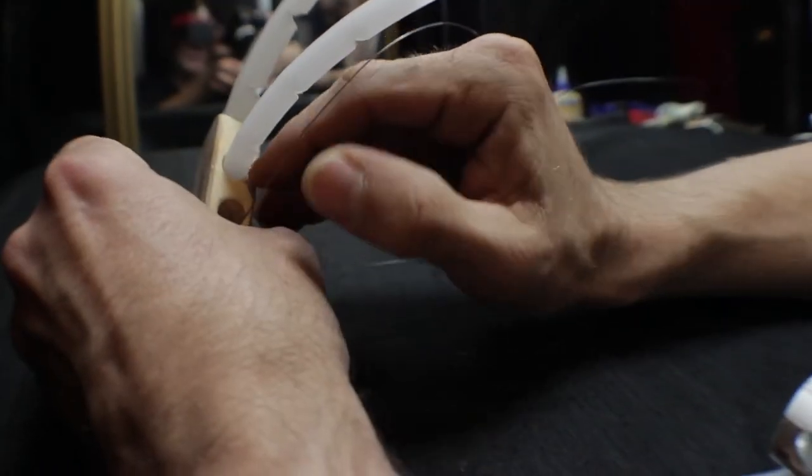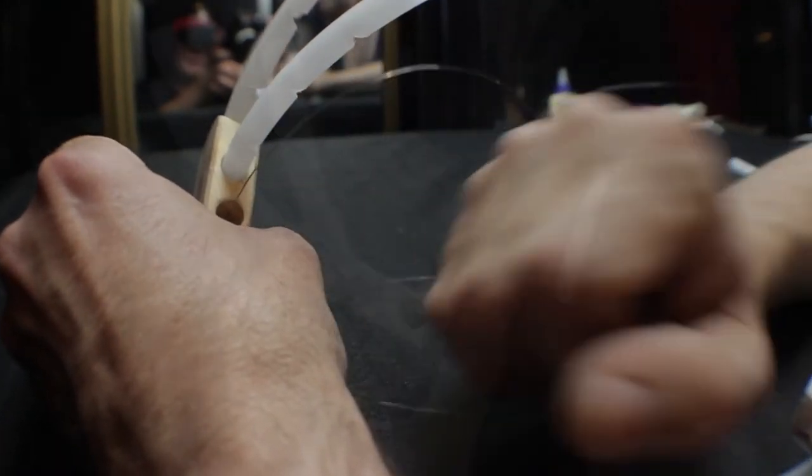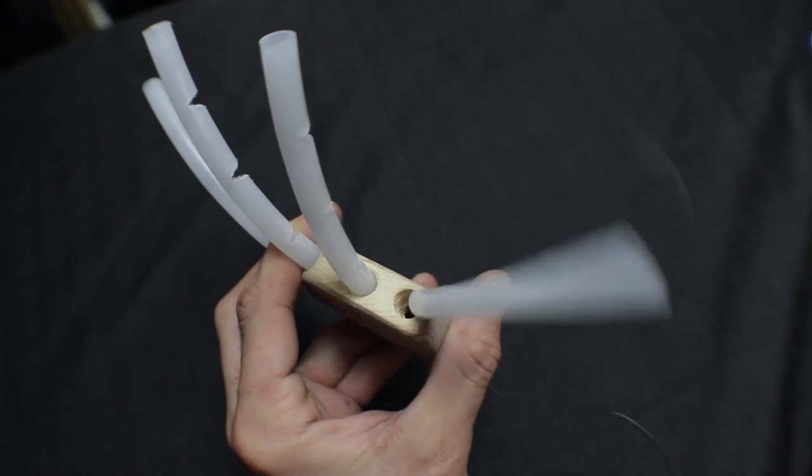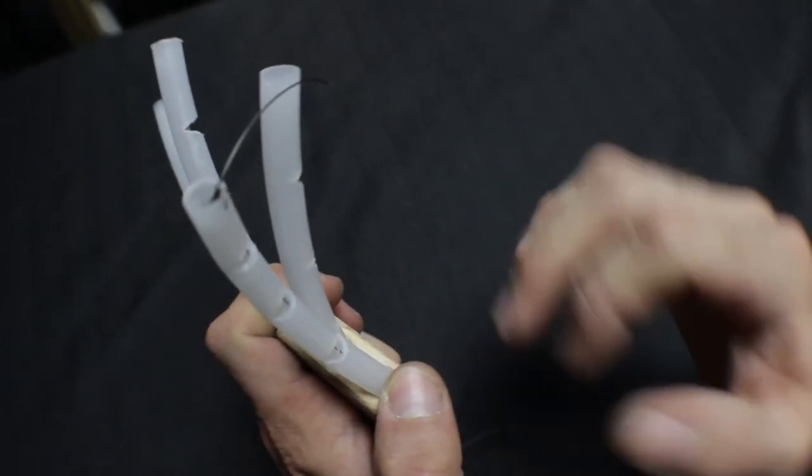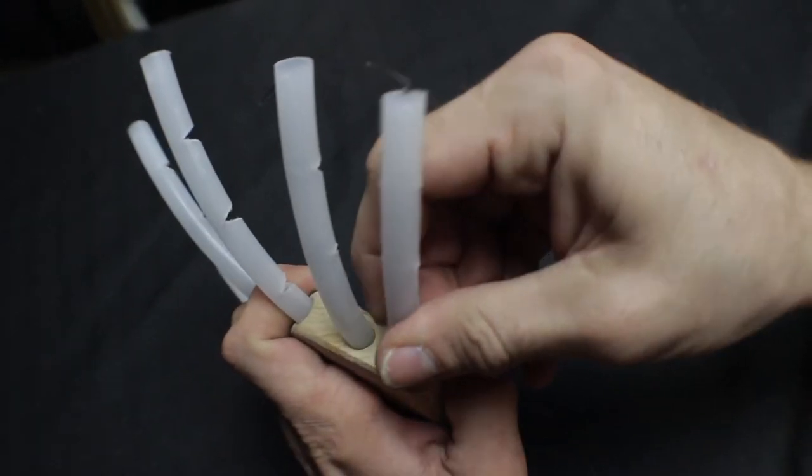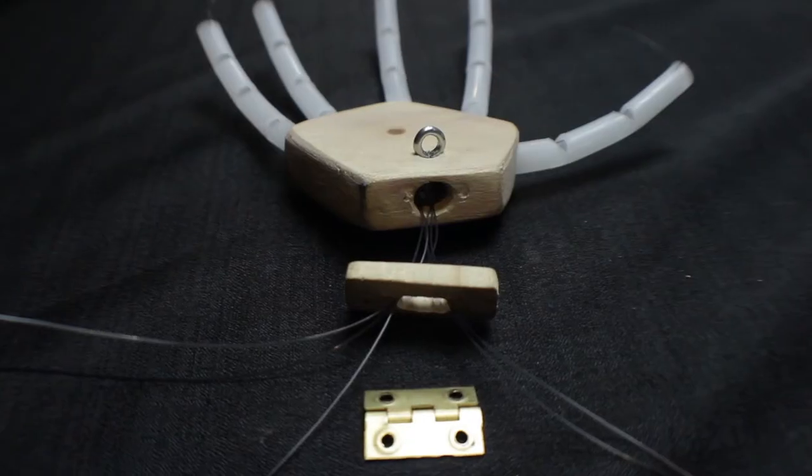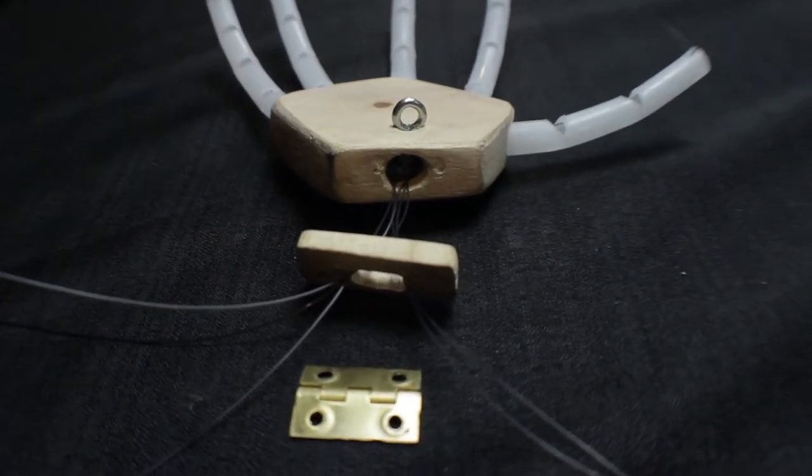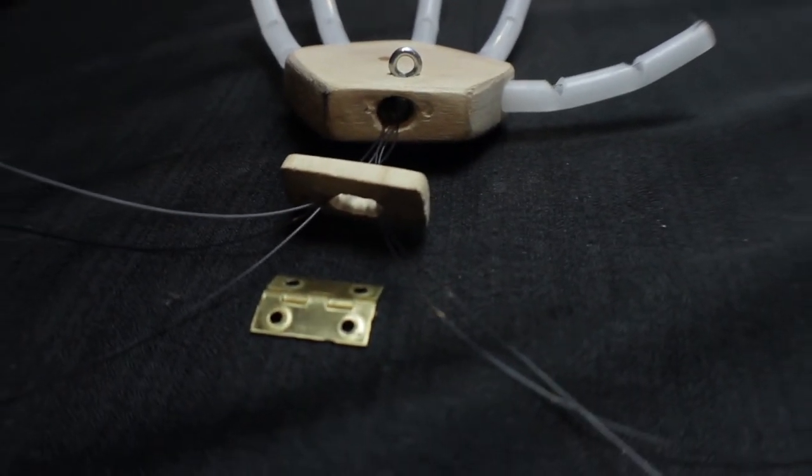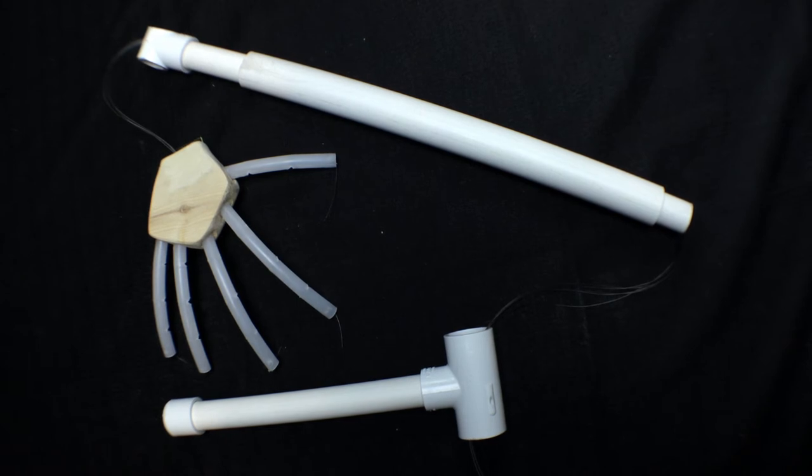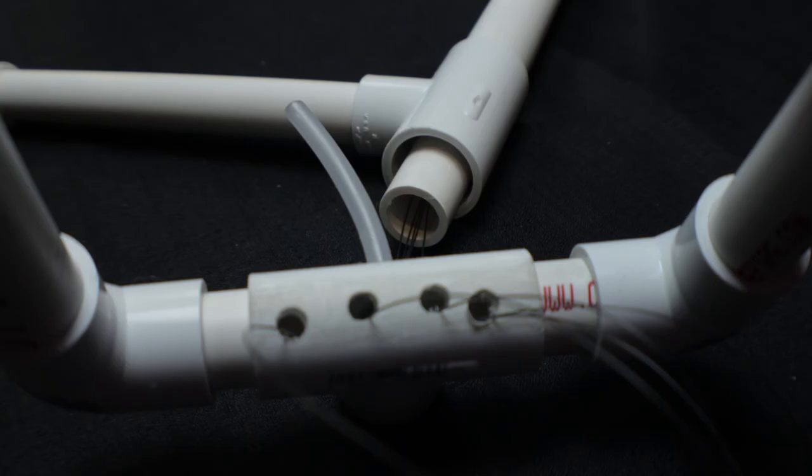Each wire is then threaded through the inside of the fingers, passing through the inner palm and out of the wrist. Now thread all the wires through the opening of the wooden wrist end cap and into the forearm. Thread each wire through the appropriate five holes drilled into the T-connector, which connects to the base.